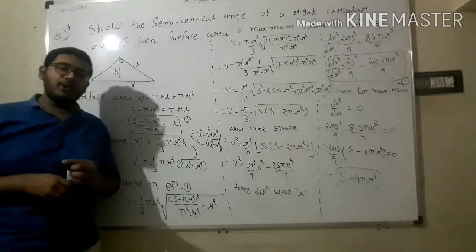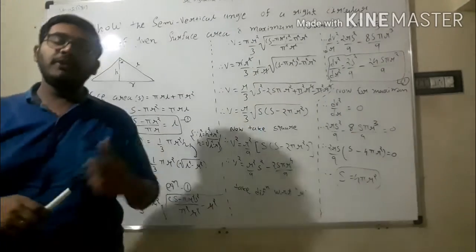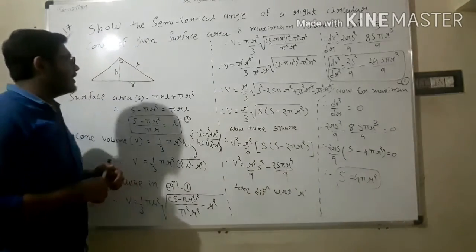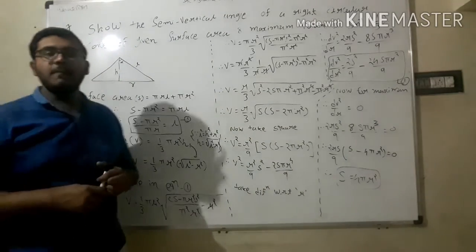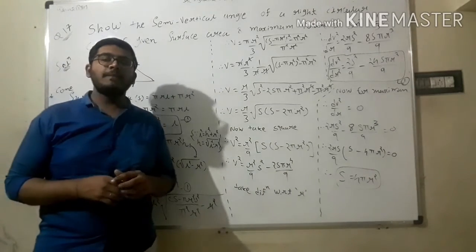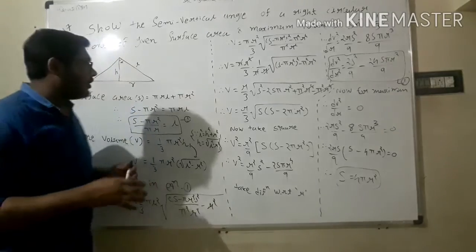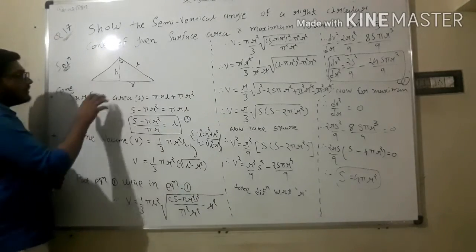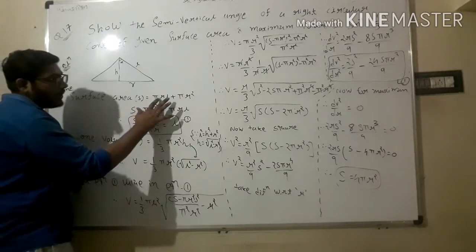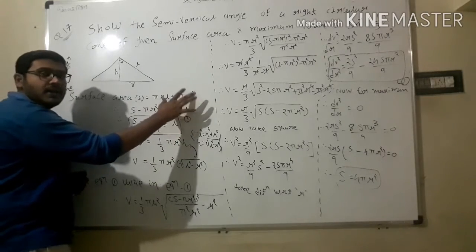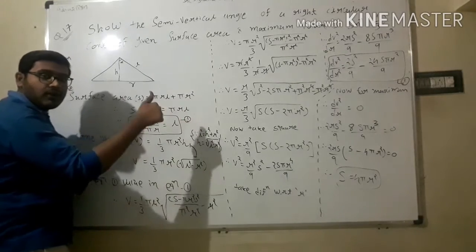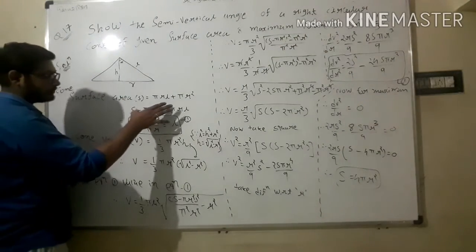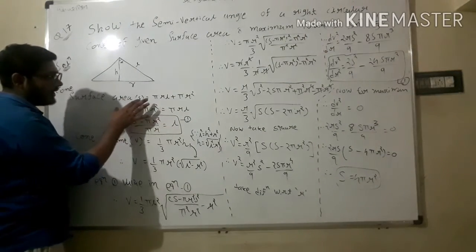Now, what is the surface area of a cone? It is πrl + πr². So we take the surface area S = πrl + πr². From this we can write l = (S - πr²) / (πr). Take this as equation 1.